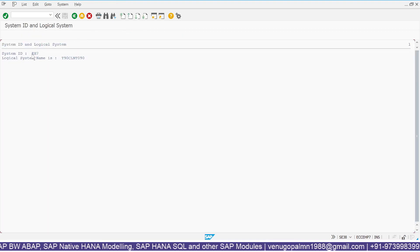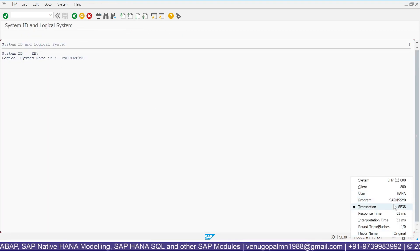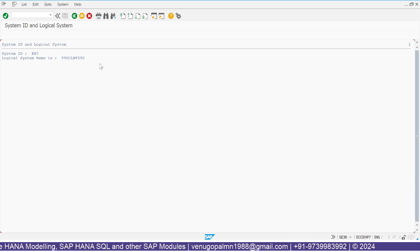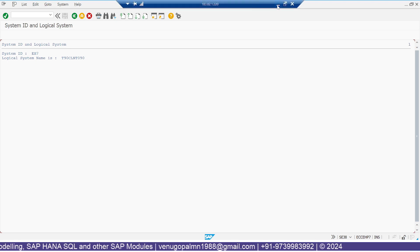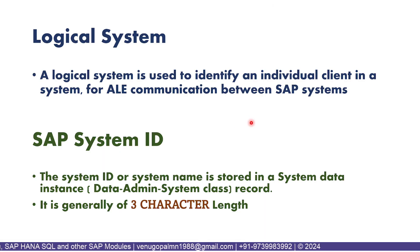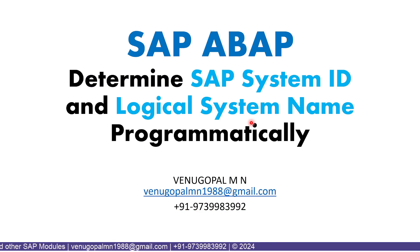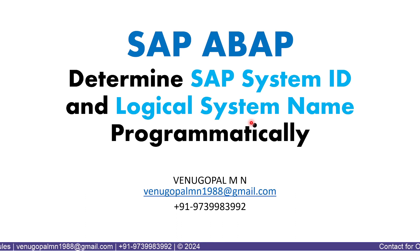If you run this, the system ID is printed as EH7, and at the same time, the logical system name is printed as T90 Client 090. This is how you will be able to identify the SAP system ID and logical system name of the current system you have logged into programmatically.